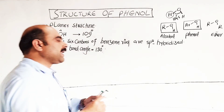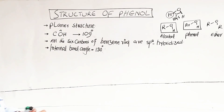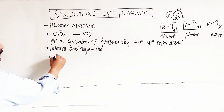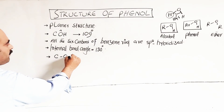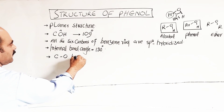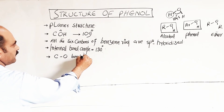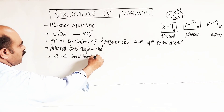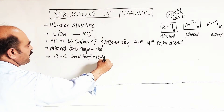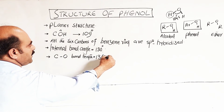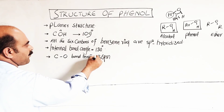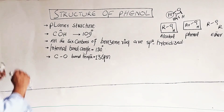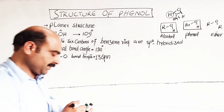The carbon-oxygen bond length — that is, the bond between the benzene ring carbon and the oxygen — has a bond length of 136 picometers. Picometer is the unit of very short distance. That carbon is SP2 hybridized, which is clear.